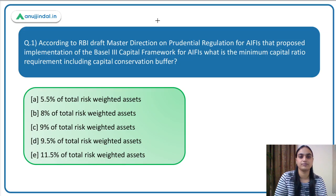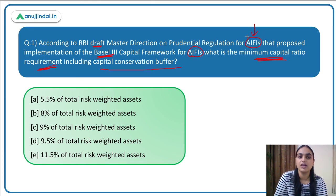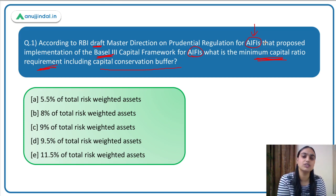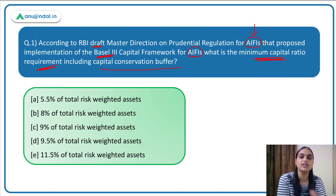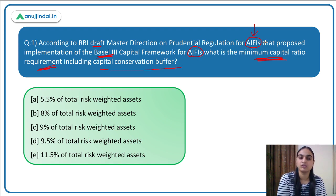Moving on to the first question: according to the RBI draft master direction on prudential regulation for the All India Financial Institutions that proposed implementing the Basel 3 framework, what is the minimum capital ratio requirement including the capital conservation buffer? Recently RBI has released these draft directions applicable for the All India Financial Institutions, and soon after comments are invited, the proper regulations will also be finalized.